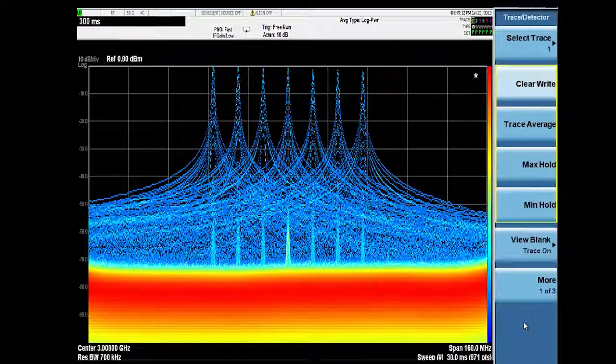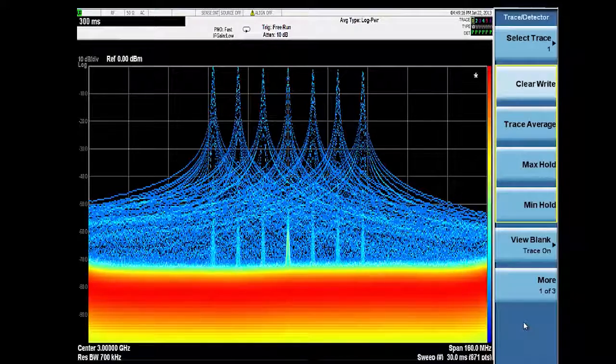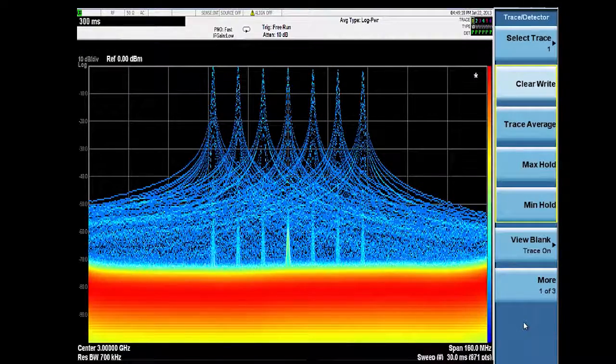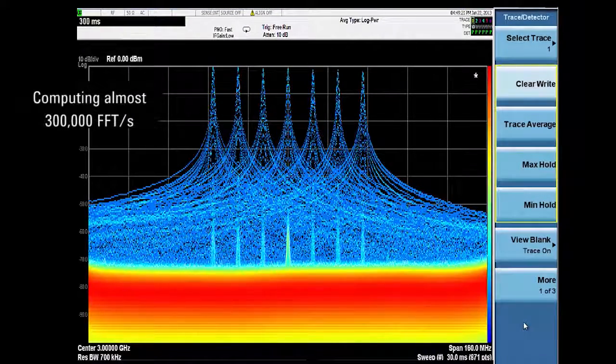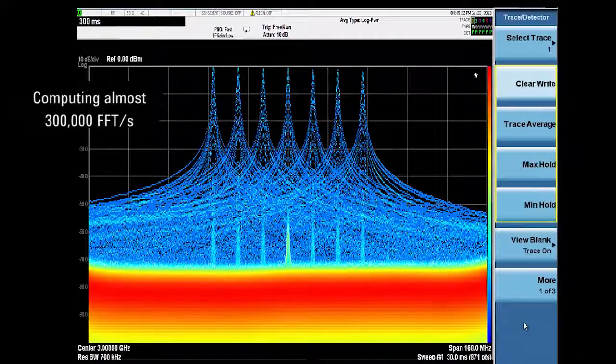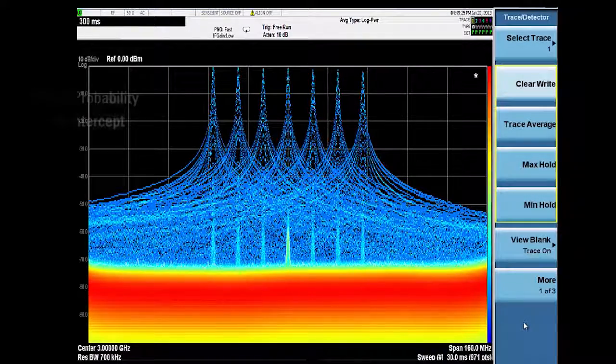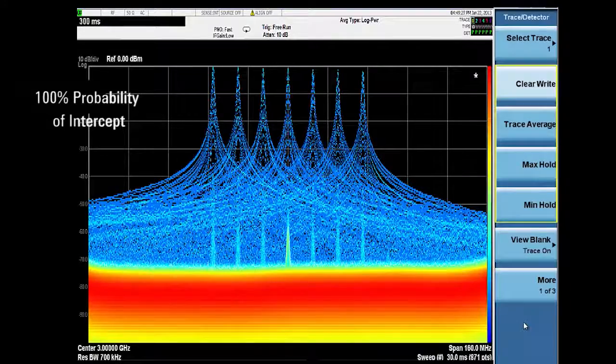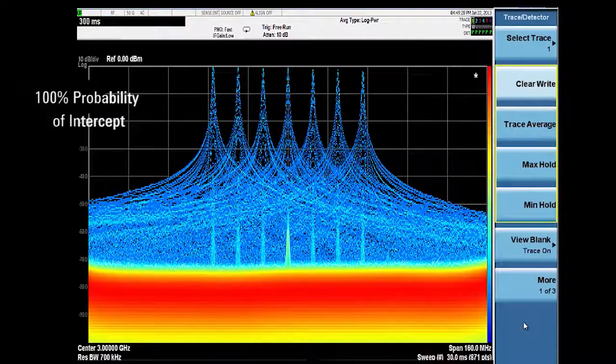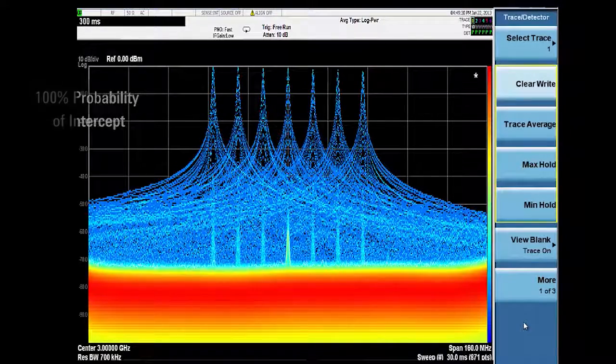Real-time mode can display both the real-time spectrum and power versus time. The real-time spectrum works by computing almost 300,000 FFTs per second on overlapping memory registers to give an industry-leading 100% probability of intercept on any signal longer than 3.57 microseconds.